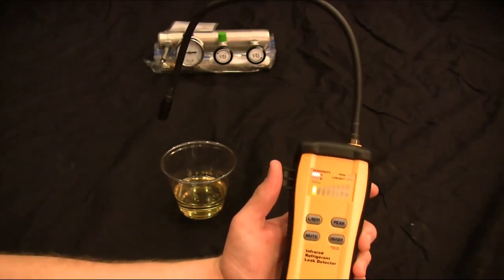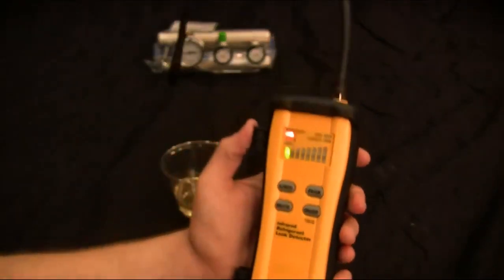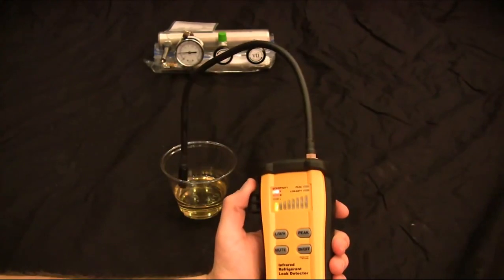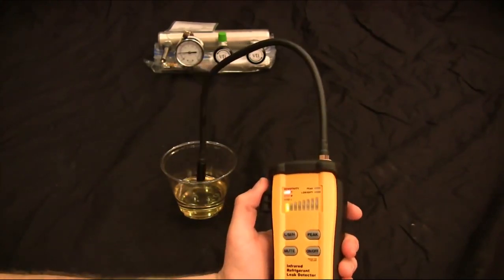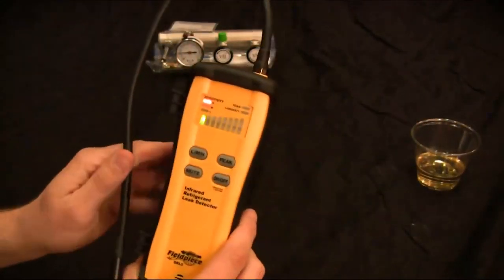Now let's put it into turbo mode. Put it into turbo mode. You can see that the light is fluttering. And it's still not going to go off on that oil. It will go off on refrigerant, not refrigerant oil. So there is the SRL-2.